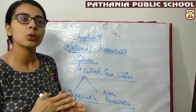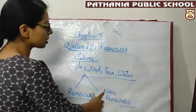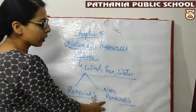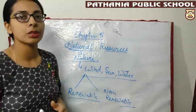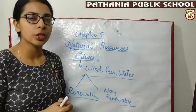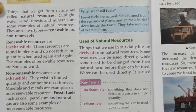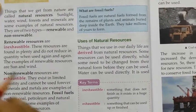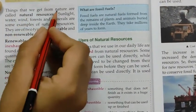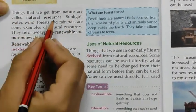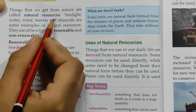So now let's read from the book. Things that we get from nature are called natural resources.